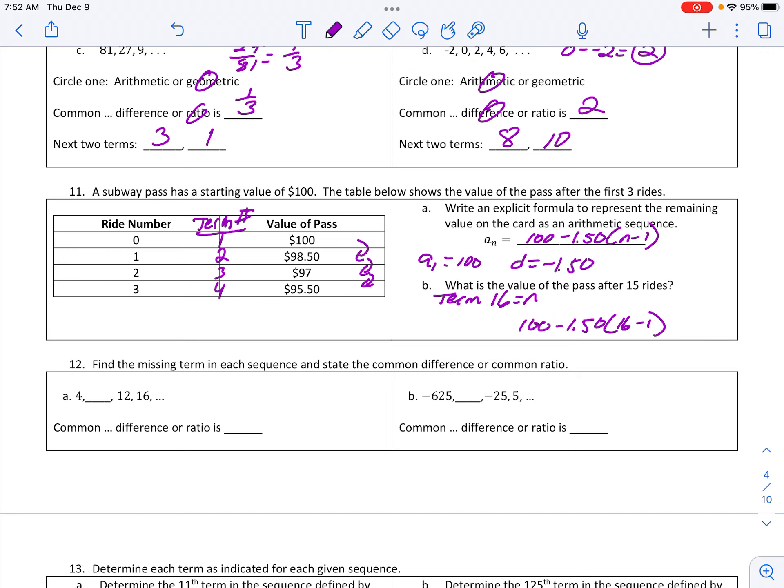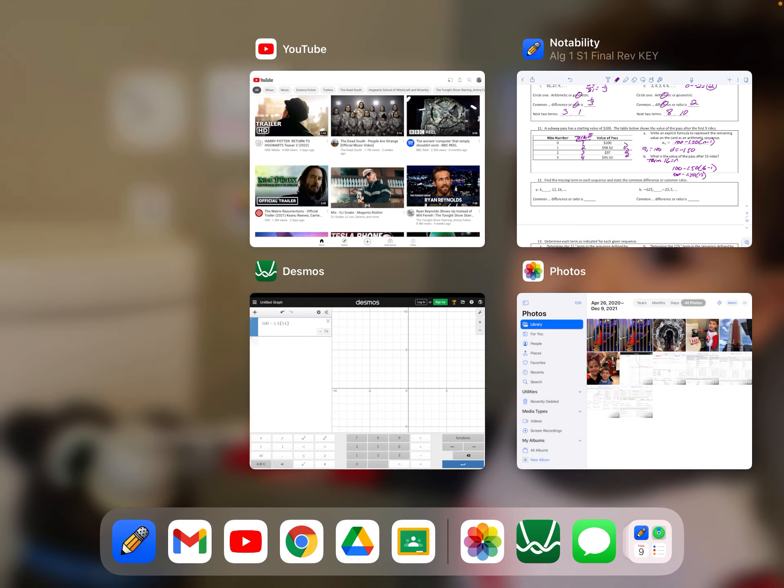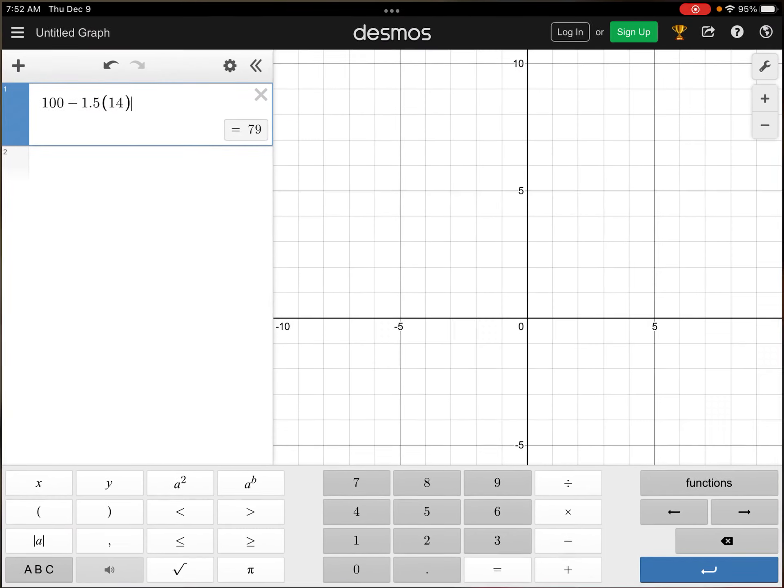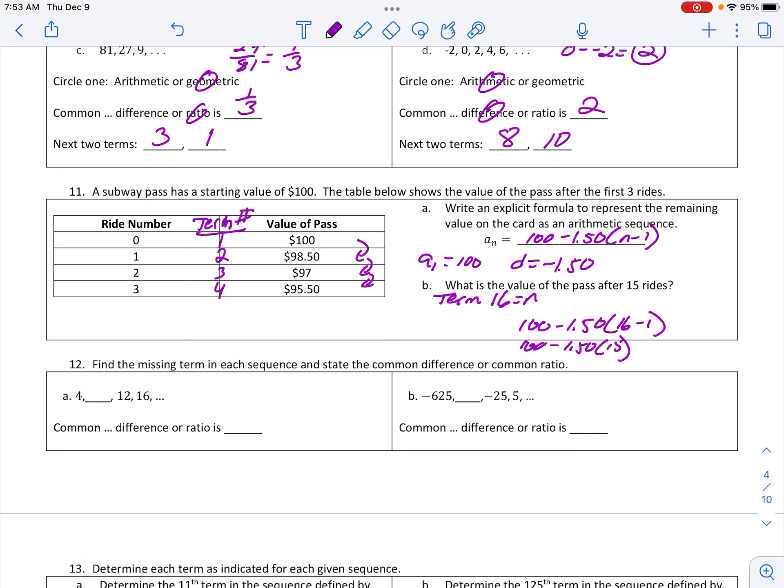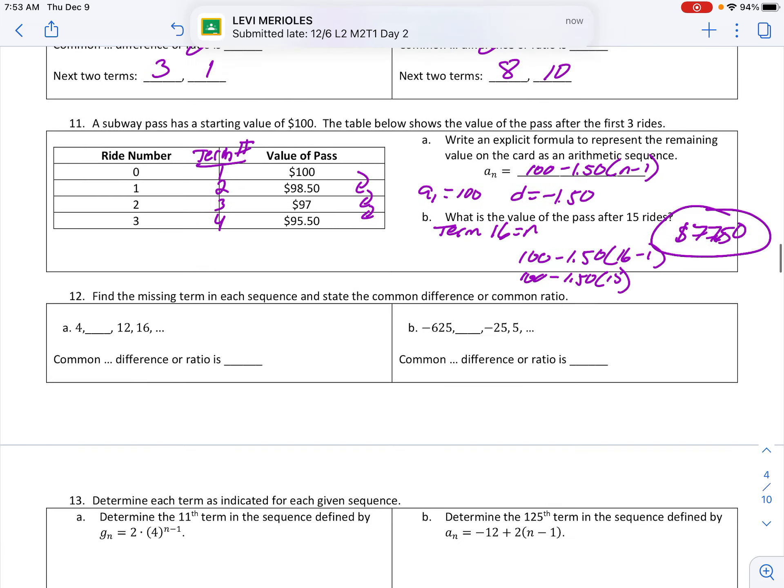And then I'm going to go to Desmos and type that in. So 100 minus 1.5 times 15 means I get $77.50 remaining on my card. $77.50.